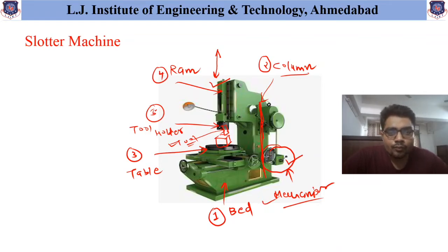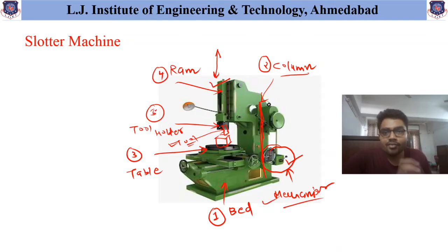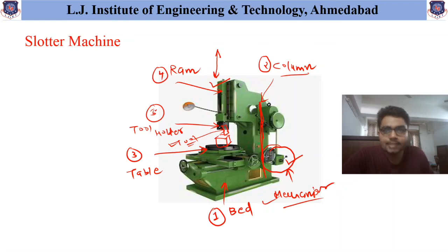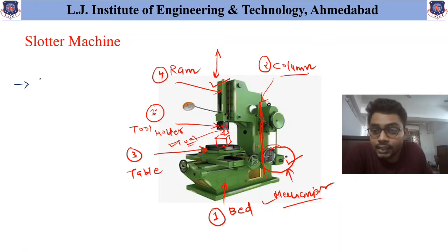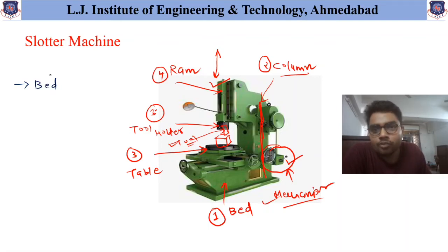So now we have summarized the main important parts available in the slaughter machine. Now if we summarize the common parts available in the shaper machine, planer machine, and slaughter machine, let us list them. The first common part available in all three machines — shaper, slaughter, and planer — is the bed, which is used to hold and support the entire structure.